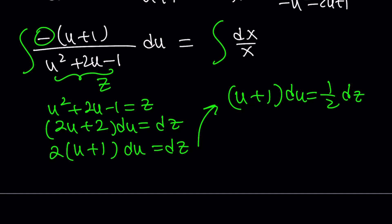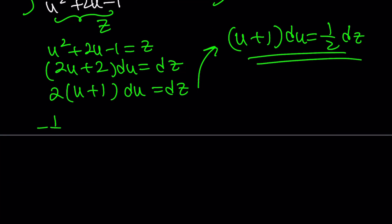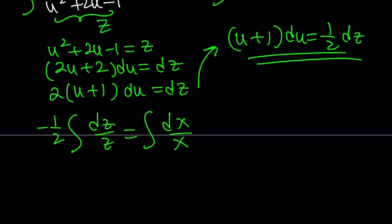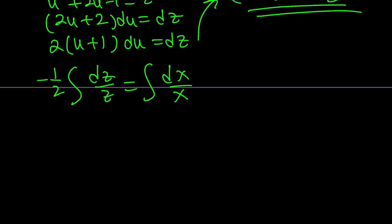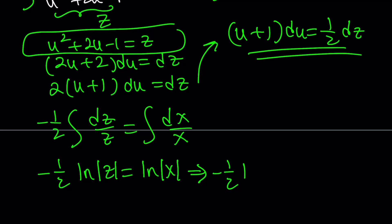There's also a negative sign to consider. The (u plus 1) du with the negative sign becomes negative ½ dz. So we have the integral of negative ½ dz/z equals the integral of dx/x. Integrating both sides gives: negative ½ ln|z| equals ln|x| plus C. Now let's back-substitute — z is u² plus 2u minus 1 — so we get negative ½ ln|u² plus 2u minus 1| equals ln|x| plus C.